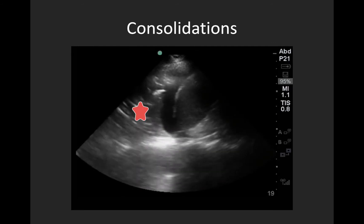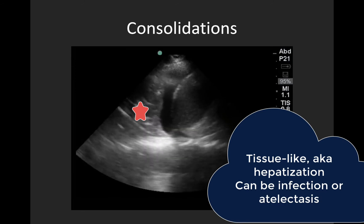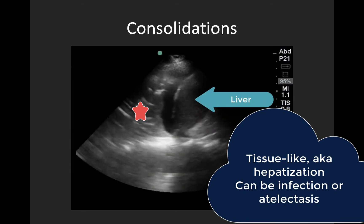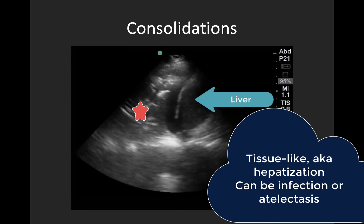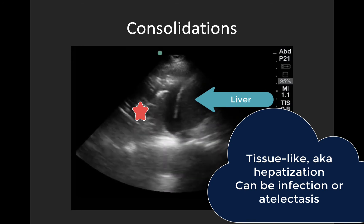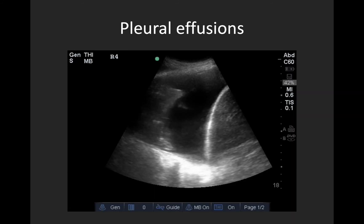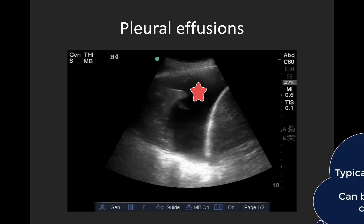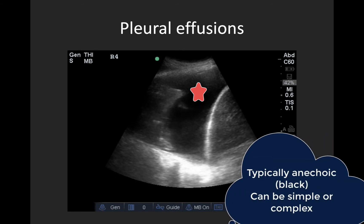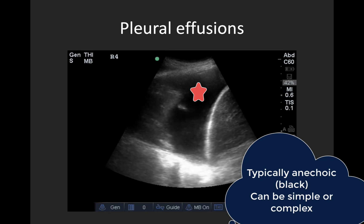Next are consolidations — this is called hepatization or the tissue-like sign, because the lung really does start to look like the liver. In contrast to radiology language where consolidation implies infection, in lung ultrasound vernacular, consolidations can be either infection such as pneumonia, or atelectasis. Finally, pleural effusions are typically seen as an anechoic or black space bordered by the diaphragm, pleura, and a consolidated or collapsed lung. We'll review these patterns in more detail in future screencasts.